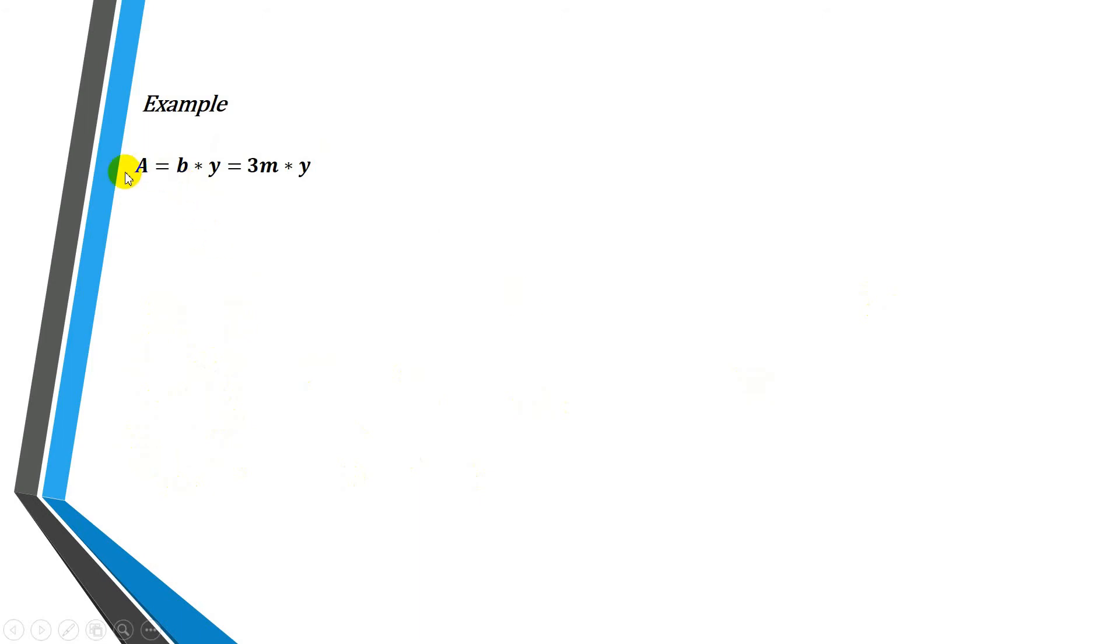We need to calculate the area that will be the width multiplied by the depth, in this case 3 meters multiplied by y. We need to calculate the width perimeter that will be the width plus 2 times the depth. Then, we need to calculate the hydraulic radius, that will be the cross-sectional area divided by the width perimeter.